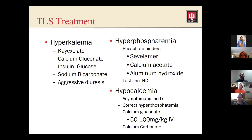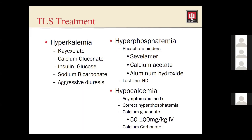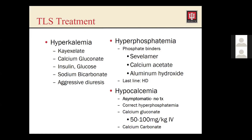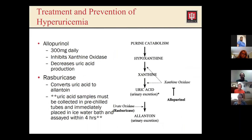For electrolyte abnormalities, treat them as you would in any patient. For hyperkalemia, Kayexalate is a good option, plus calcium if there are EKG abnormalities. If that's not working, use insulin and sodium bicarb, and we already have patients on aggressive diuresis. For hyperphosphatemia, use phosphate binders. For hypocalcemia, as long as patients are asymptomatic, we typically won't treat them. Allopurinol helps prevent uric acid formation by inhibiting xanthine oxidase, blocking the transition of hypoxanthine and xanthine into uric acid.